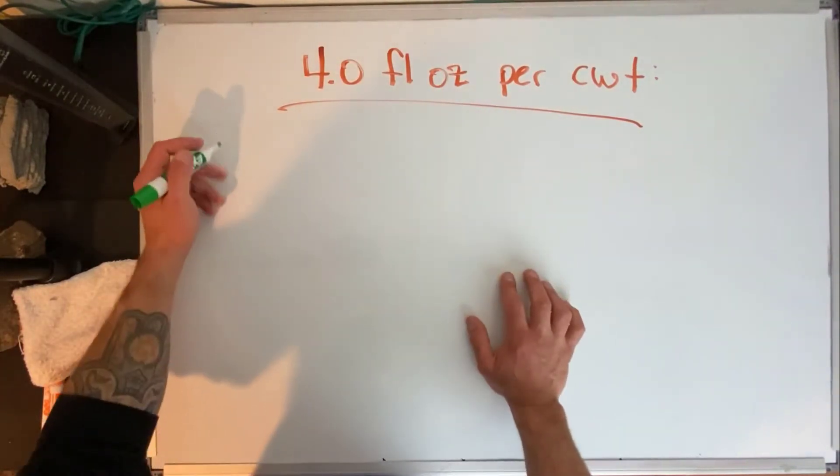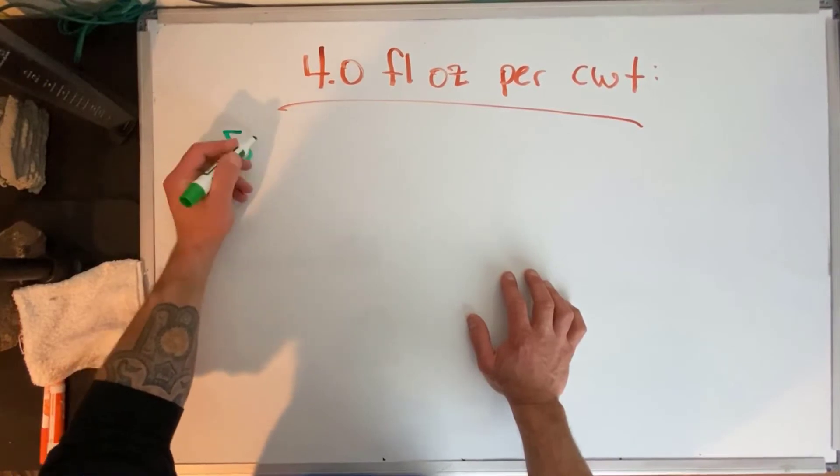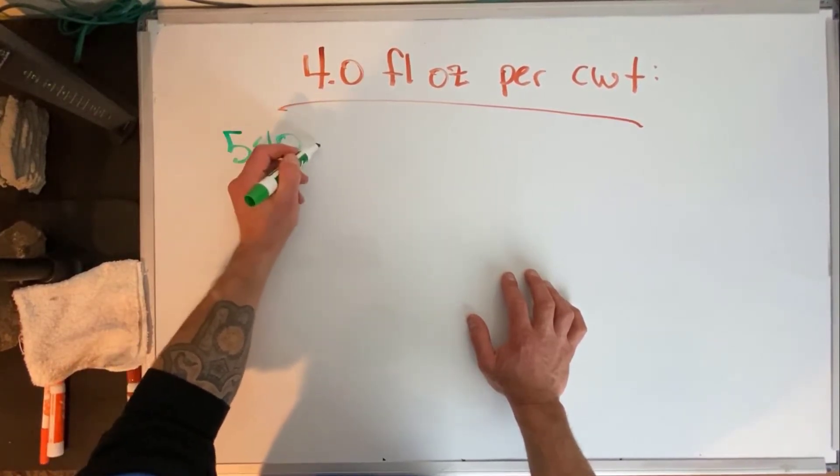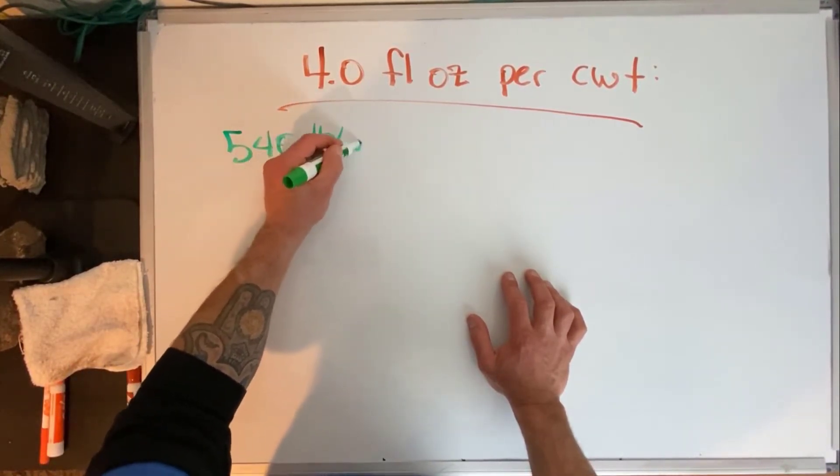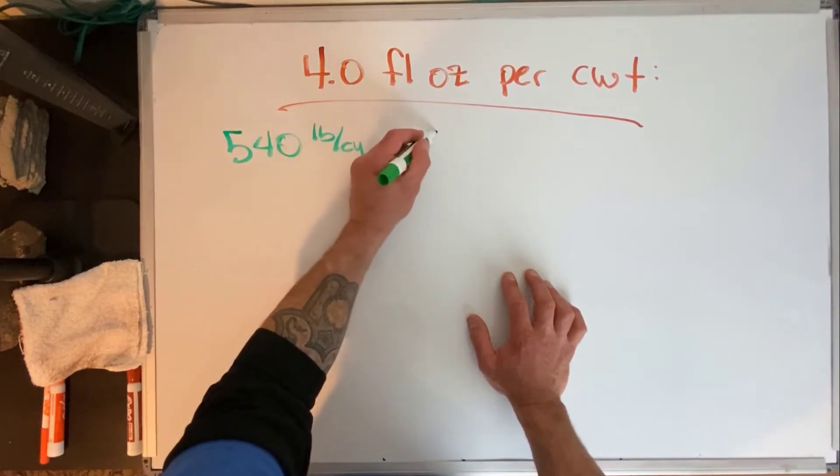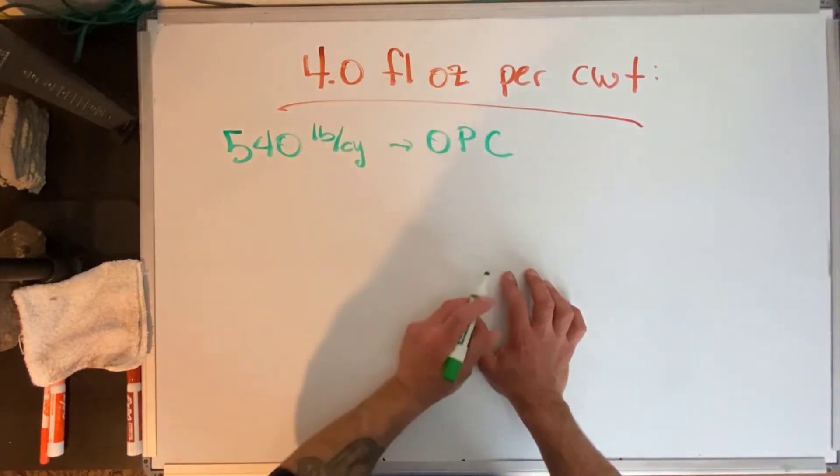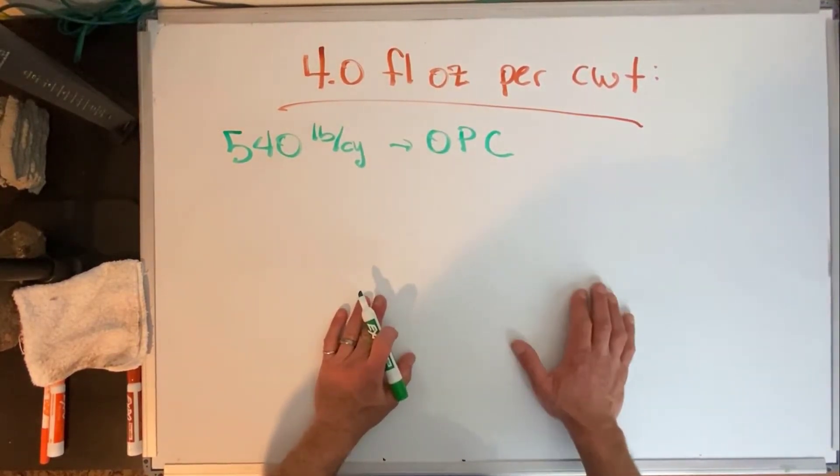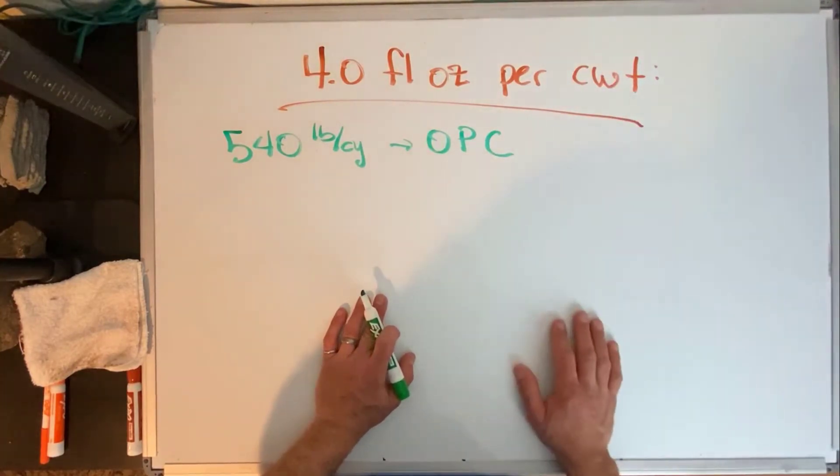So first thing that we have to do is we've got 540 pounds per cubic yard of our ordinary Portland cement. So if we have 540 pounds per cubic yard and we want to find our cement hundred weight, and that's what our CWT stands for.